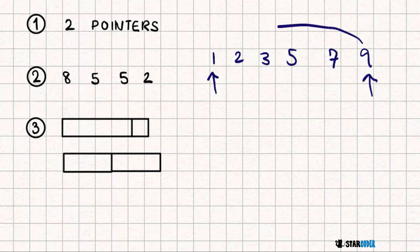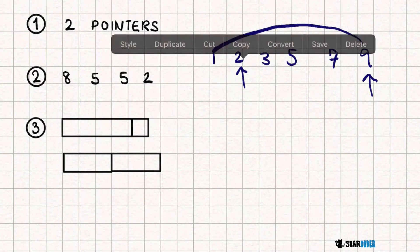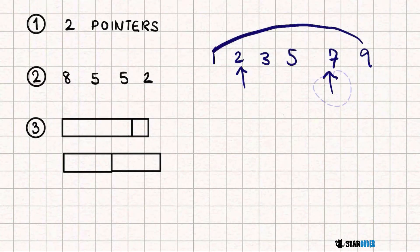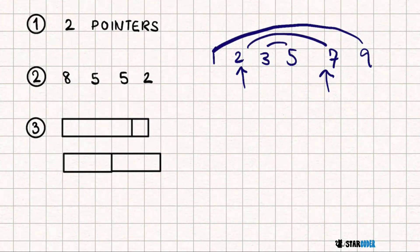One pointer starts here and the other here; we move them both inward one step at a time — this pairs with this, then these are a pair, and so on. So for our simplified question, we already know it's just going to be two pointers.